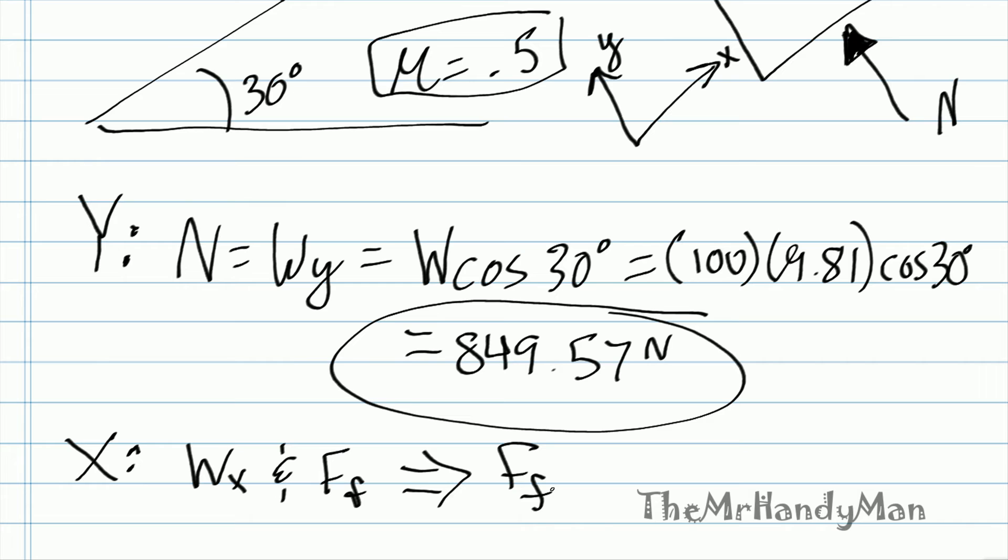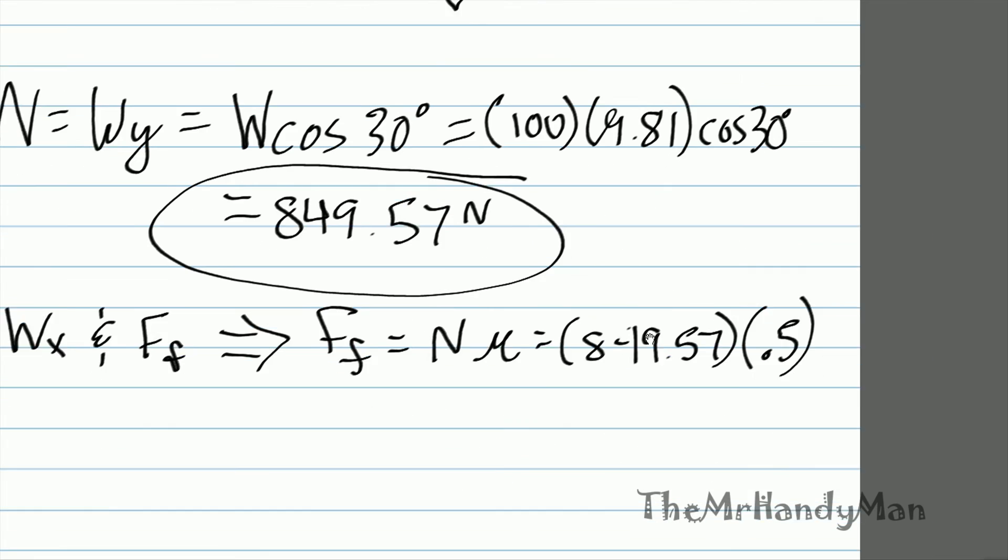Friction force is equal to normal times friction factor, which we've solved for part of this already, 849.57 times the friction factor is 0.5. That's perfect.